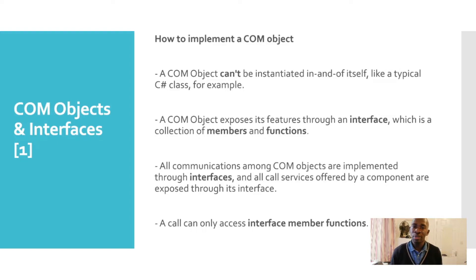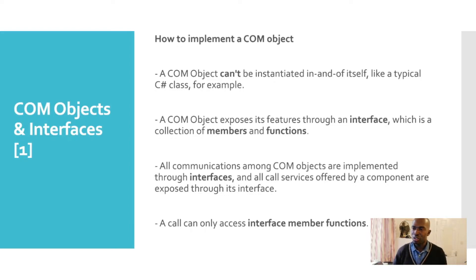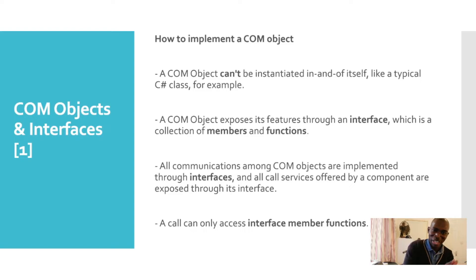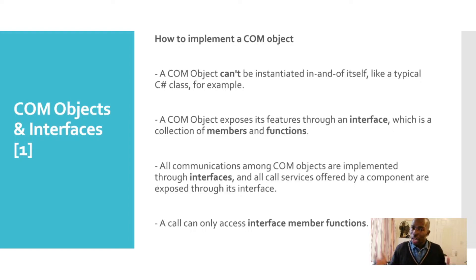How to implement a COM object. We're going to look a little bit into the workings of COM at a very introductory level, just to give you guys an idea — for those of us from a C Sharp background. You would see COM every now and then in your code base — some object or class that has a COM member — and it was a little bit intimidating. But it's very important for us as developers to embrace lower level concepts that allow us to do more and go further. A COM object cannot be instantiated in and of itself like a typical C Sharp class.